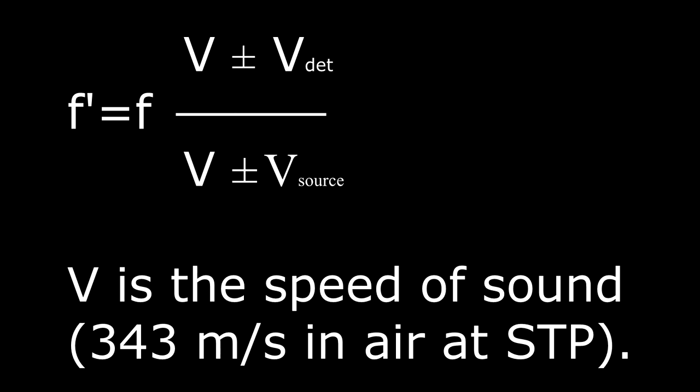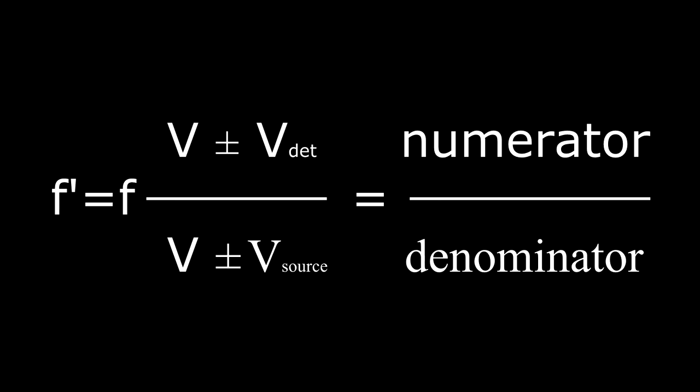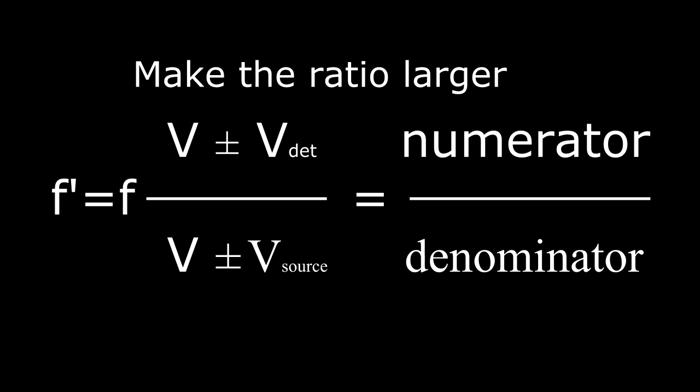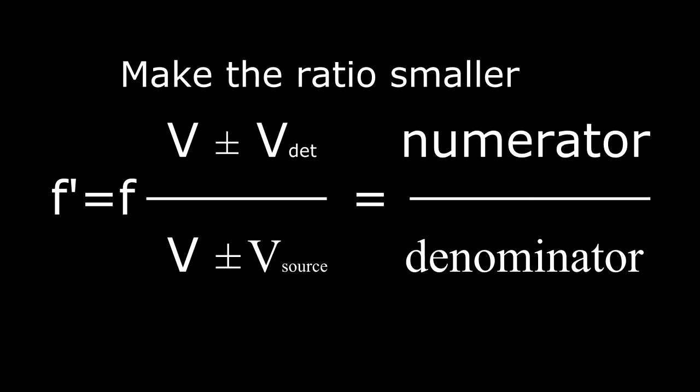This is the equation for the Doppler shifted frequency f prime. It depends on the speed of the detector and the speed of sound v, which is 343 meters per second in air at standard temperature and pressure. This equation is the ratio of a numerator and a denominator. There are two ways to make the ratio larger: you can either increase the numerator or decrease the denominator. There are two ways to make the ratio smaller: you can either decrease the numerator or increase the denominator.